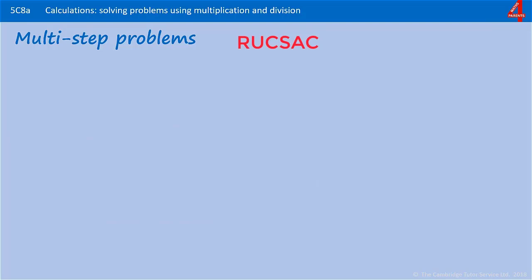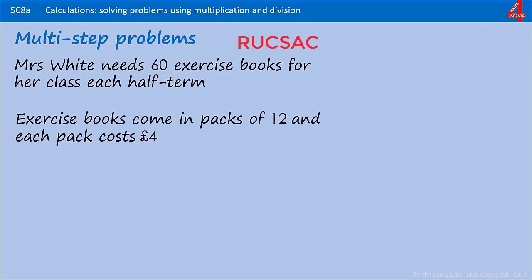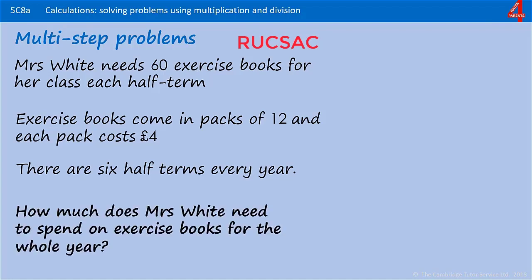Here's a similar one for you to try. Mrs. White needs 60 exercise books for her class each half term. Exercise books come in packs of 12 and each pack costs four pounds. There are six half terms in every year. How much does Mrs. White need to spend on exercise books for the whole year? The question is asking how much she spends in a whole year — not how many books, but we need to find how many to answer. Pause the video and have a go.